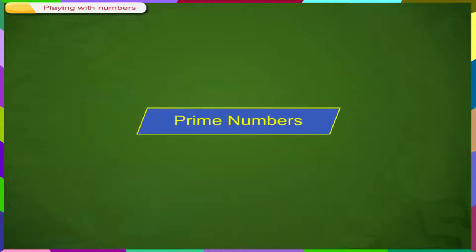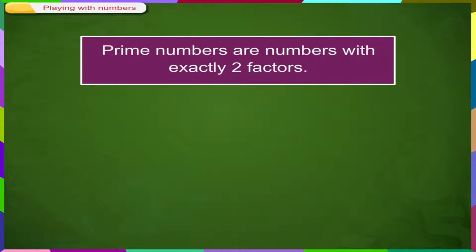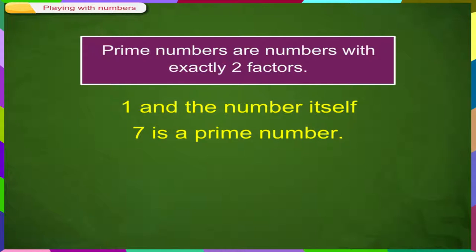Prime Numbers. Prime Numbers are numbers with exactly two factors. A prime number's only factors are 1 and the number itself. 7 is an example of a prime number. Its only factors are 1 and 7.